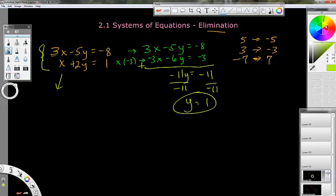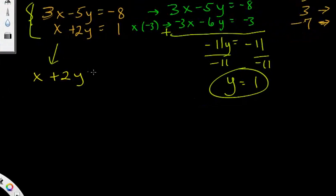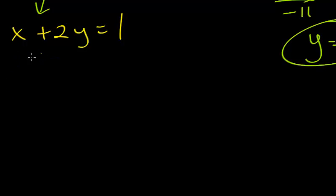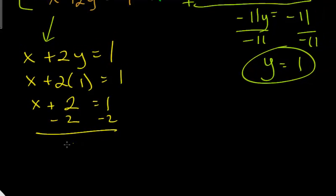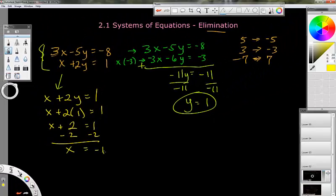I'm just going to pick this one: x + 2y = 1. I'll plug in y = 1, so it's going to be x + 2(1) = 1. Continuing here, that's x + 2 = 1, and then I subtract 2.